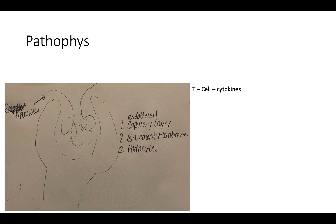Here's a little diagram I made of a nephron. You can see there are three layers: an endothelial capillary layer, a basement membrane layer, and then the podocytes.